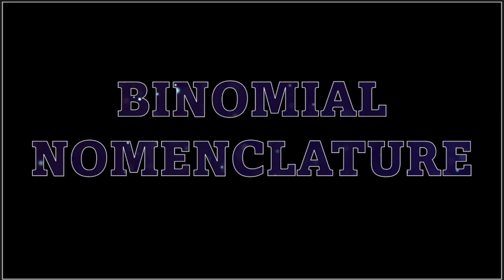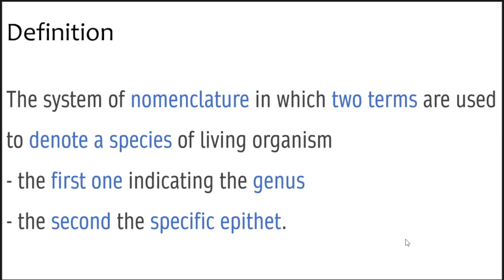Hello everyone. In this video, we will be discussing binomial nomenclature. As the name suggests, it is a way of naming plants with two terminologies — 'bi' refers to two, and 'nomial' refers to name in Greek origin. The definition of binomial nomenclature is the system of nomenclature in which two terms are used to denote a species of living organism — in our case, a plant. The first term indicates the genus name and the second indicates the specific epithet.